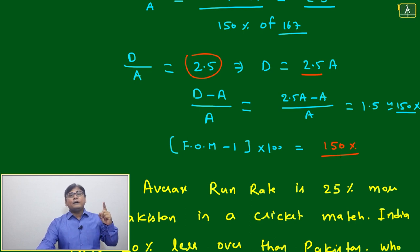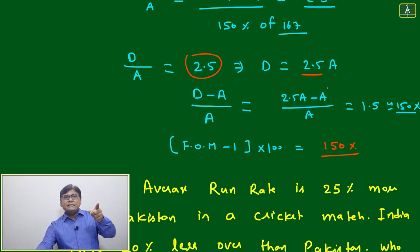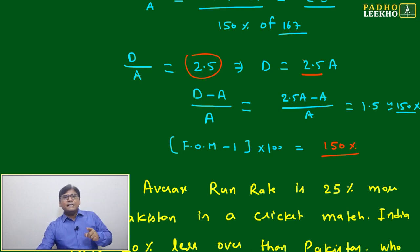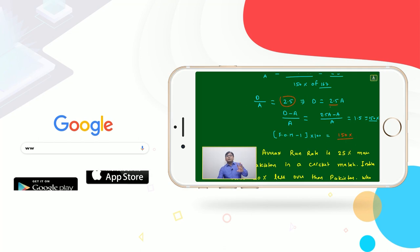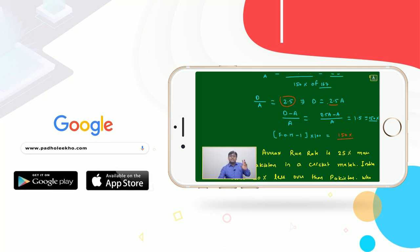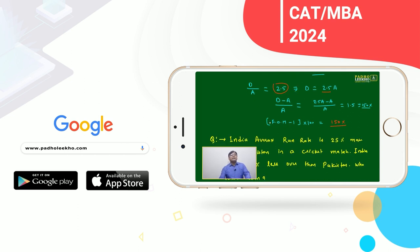So d is 150 percent more than a, but d is 2.5 times of a. Always be careful about the difference between percentage increase and how many times — the first digit will generally differ by one. D is 2.5 times a, but d is only 150 percent more than a.